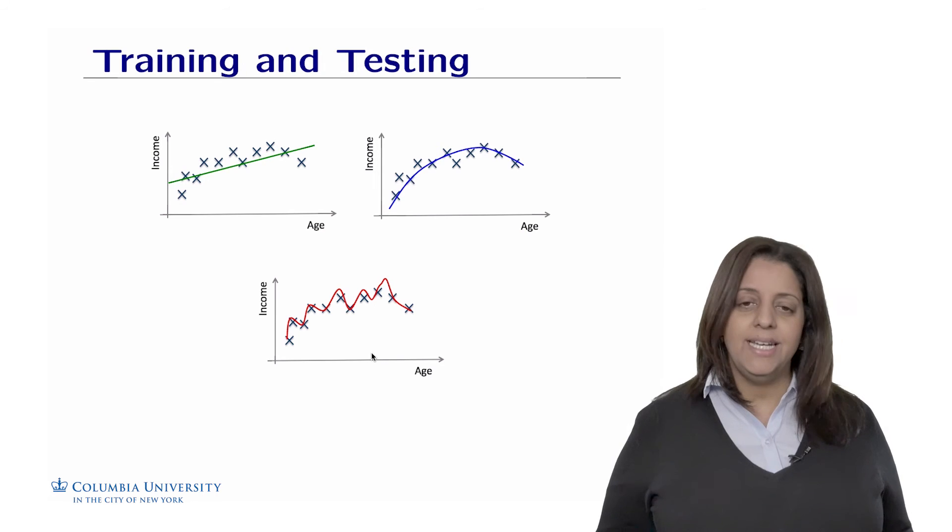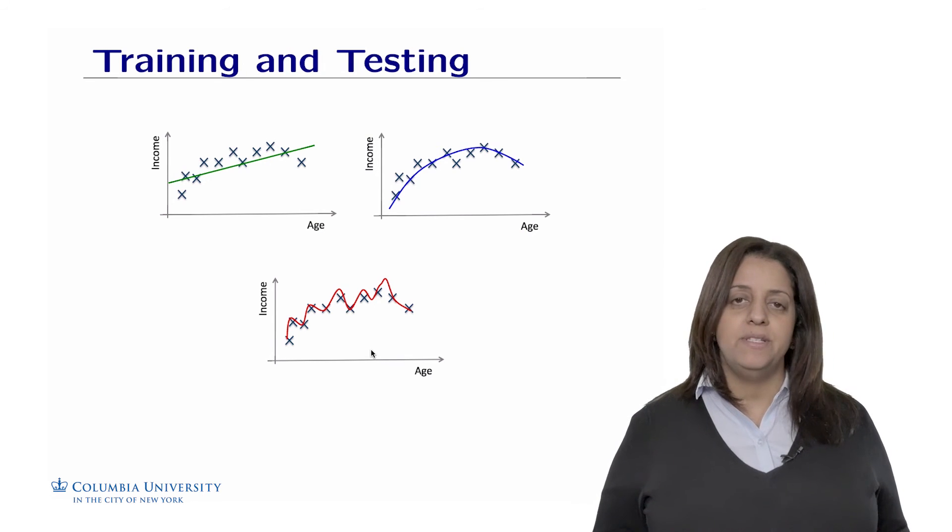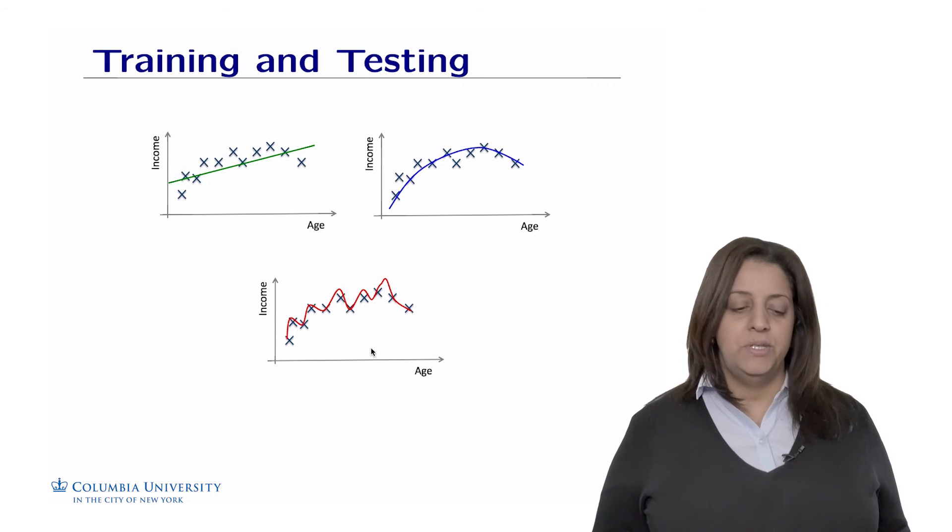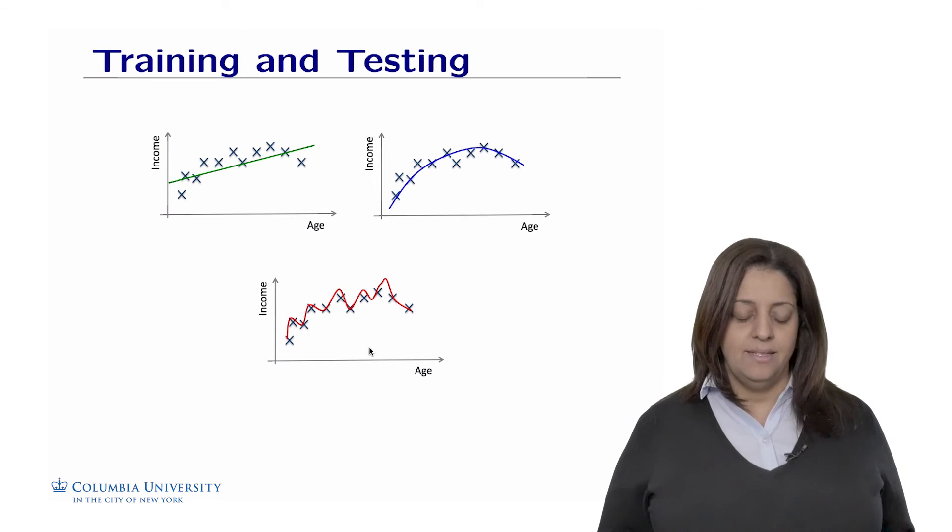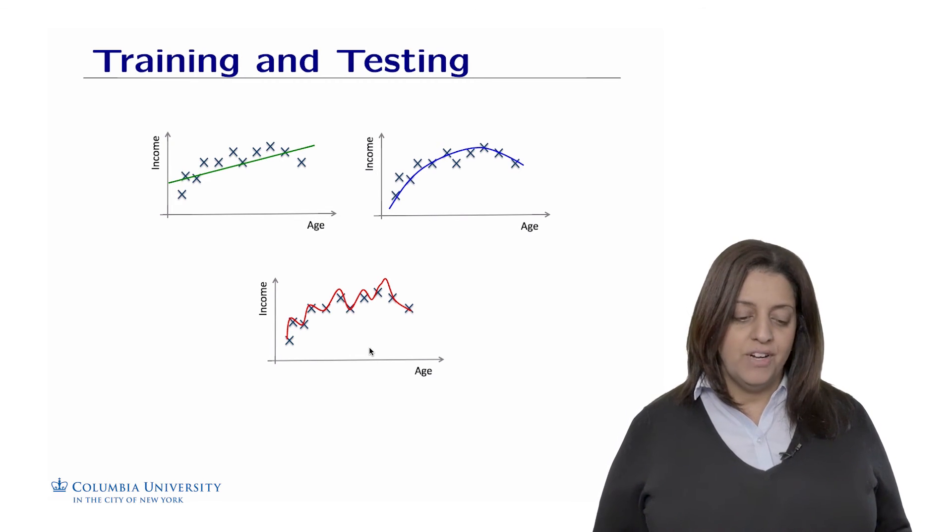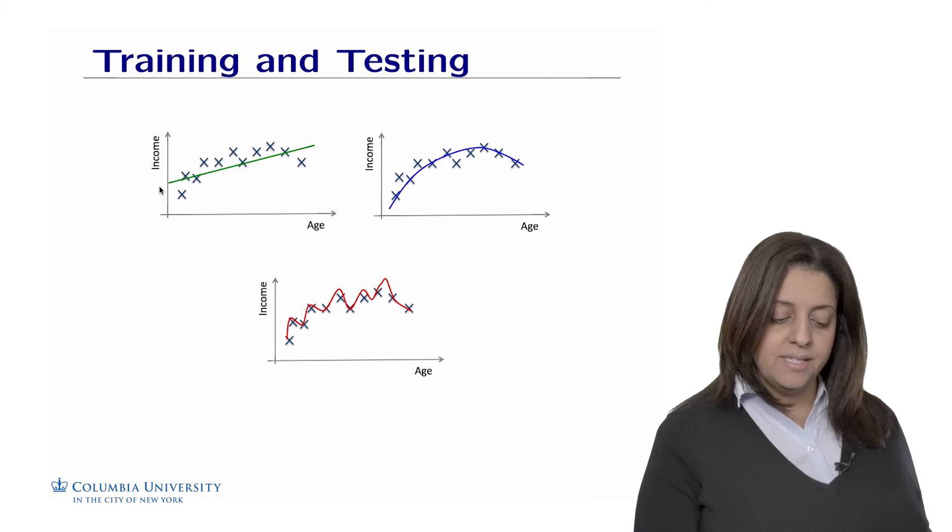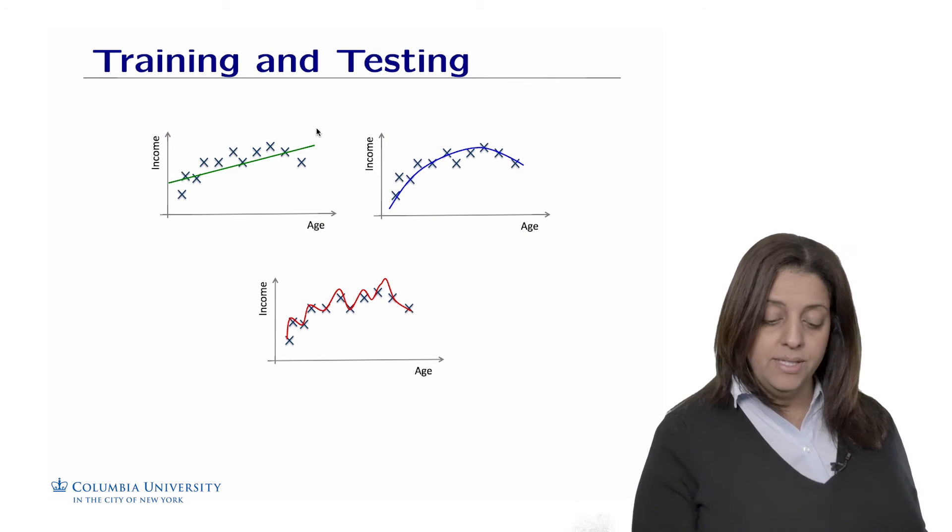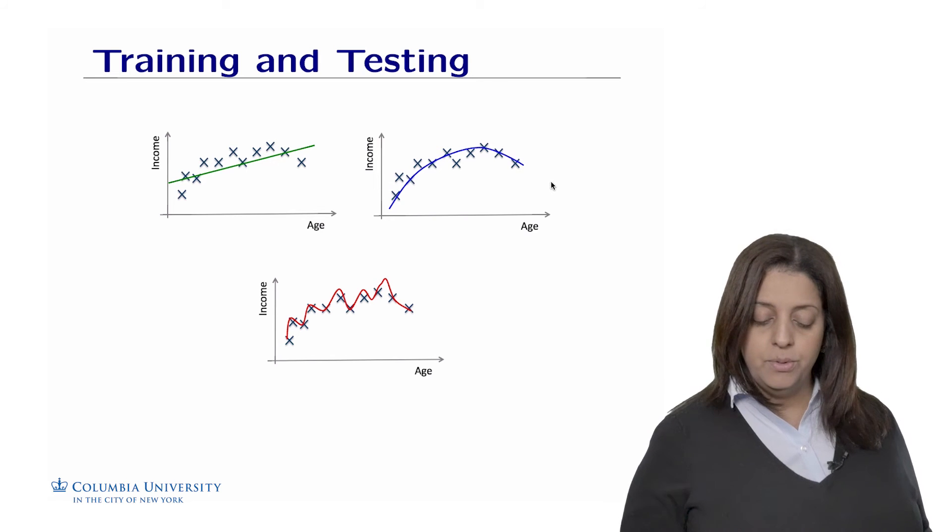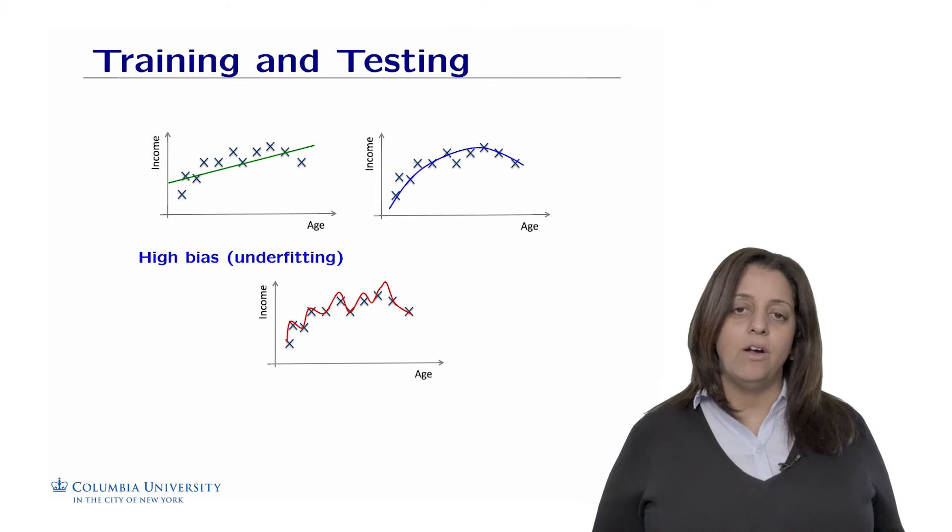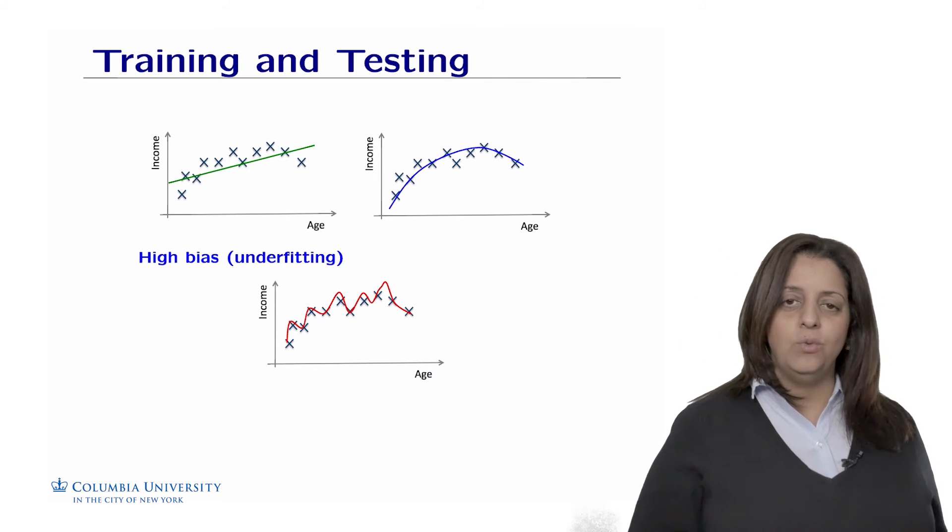So let's illustrate this concept of training and testing and structural risk minimization with respect to this example on regression. So suppose we want to predict the income in function of age. So remember, we have part of the data as data points on a 2D space. And the idea is to find different functions or different prediction models that give us a prediction of a future instance. So for example, this line here is a linear model that goes through the data points or this second curve in blue or also this complicated curve here. In the first example, we talk about underfitting or high bias because this line does not really fit well the data.